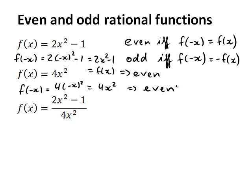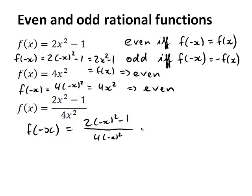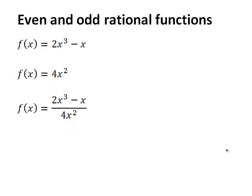Now, what does this mean for the rational function that's composed of these two polynomials — these two even functions? Well, we can do this step by step again. f of negative x gives us 2 times negative x squared minus 1, divided by 4 times negative x squared. And of course, we still get 2x squared minus 1 over 4x squared, which was the same as f of x. So the quotient of these two even polynomials is also even.